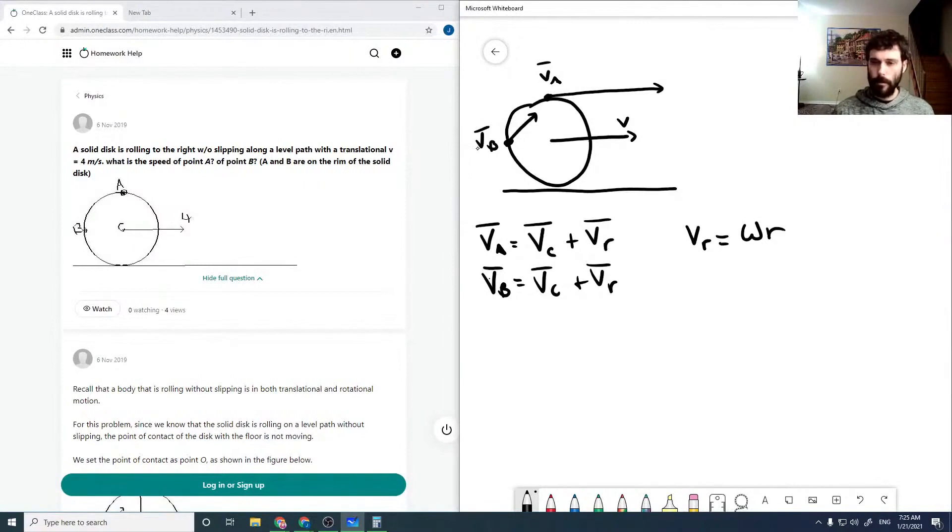But then omega is our center velocity over R, and so that means that our VR is just our central velocity.